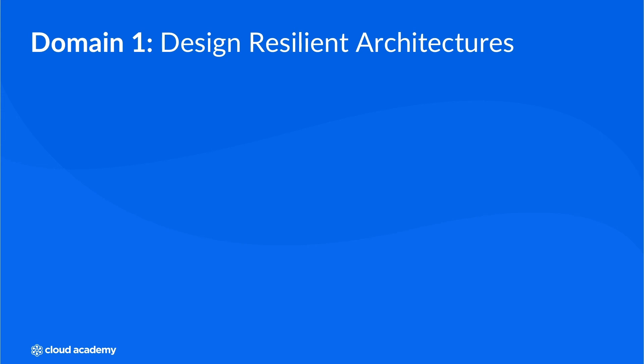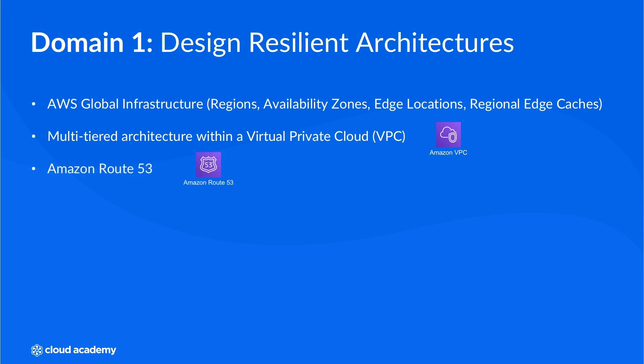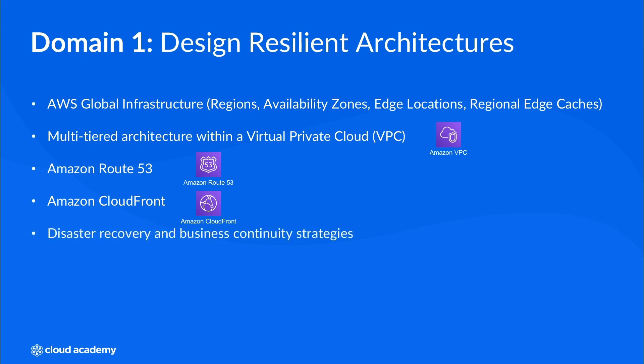With this in mind, you will be introduced to the AWS global infrastructure, providing you with a foundation of how the underlying architecture is pieced together on a global scale. We shall discuss how to implement a multi-tier architecture within a VPC using multiple subnets and networking components. You will also be introduced to Amazon Route 53 and Amazon CloudFront, as well as some common disaster recovery and business continuity strategies.